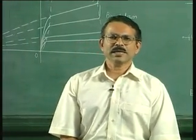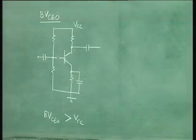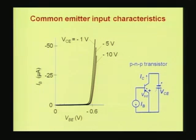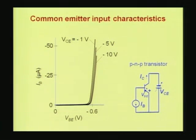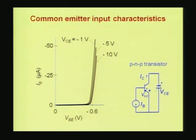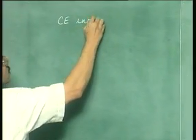Next let us briefly discuss the common emitter input characteristics as shown in this slide. Here you see that we are plotting the base current as a function of emitter-to-base voltage. The circuit diagram is also shown next to the characteristics. What you find is when you change the collector-to-emitter voltage, your IB versus VBE curves are very slightly different for different collector-to-emitter voltages — at minus 1 volt, minus 5 volts, and minus 10 volts the characteristics are slightly different. Let us understand these curves. Since it is a PNP transistor, both these axes are negative.